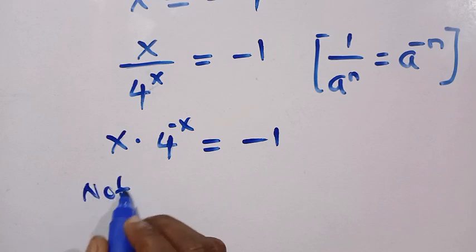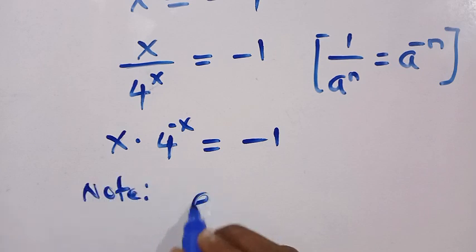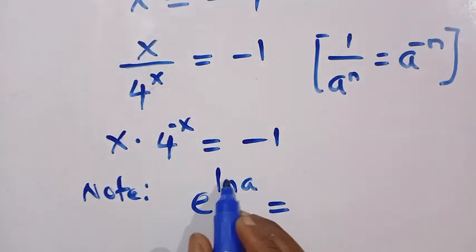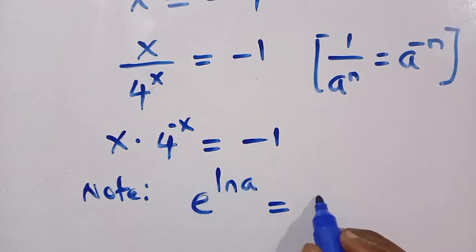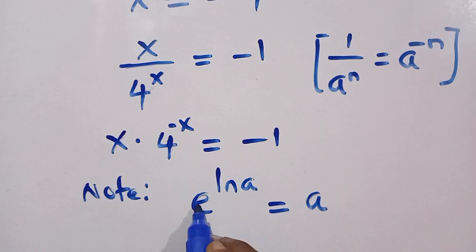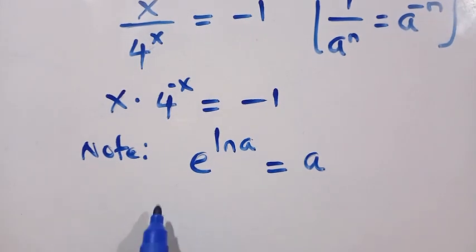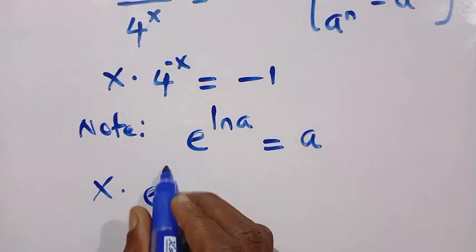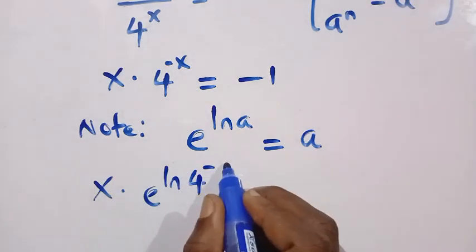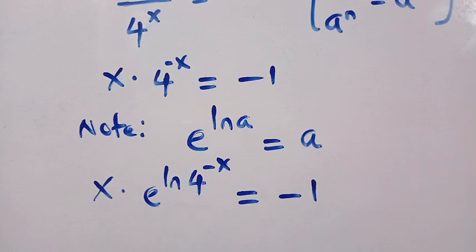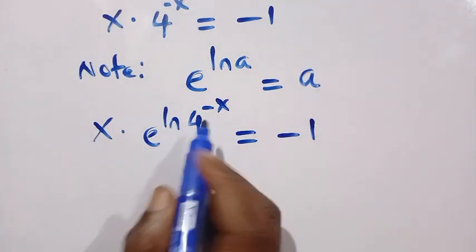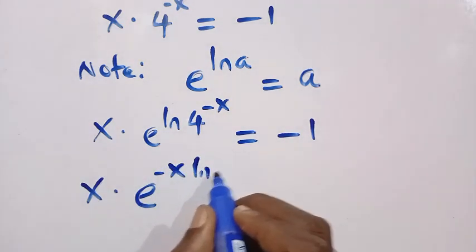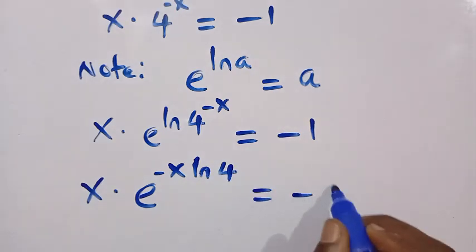We note that e raised to the power of ln(a) equals a, since e and ln are inverses of each other. Applying this to the 4 in our equation, we rewrite 4 as e^(ln 4), giving us x multiplied by e raised to the power of ln(4^(−x)) equals minus 1. By the rule of logarithms, this becomes x multiplied by e to the power of minus x·ln 4 equals minus 1.